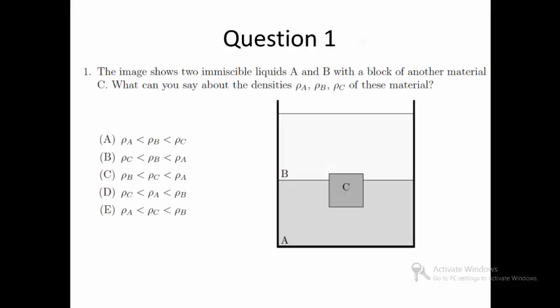Question 1. The image shows two immiscible liquids A and B with a block of another material C. What can you say about the densities, rho A, rho B, rho C of these material?